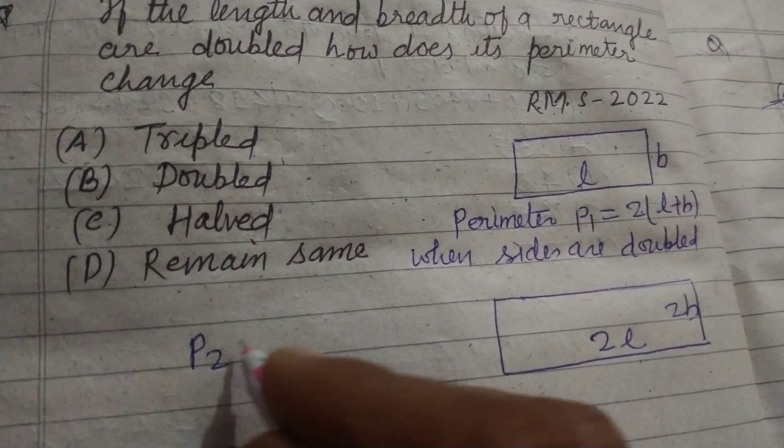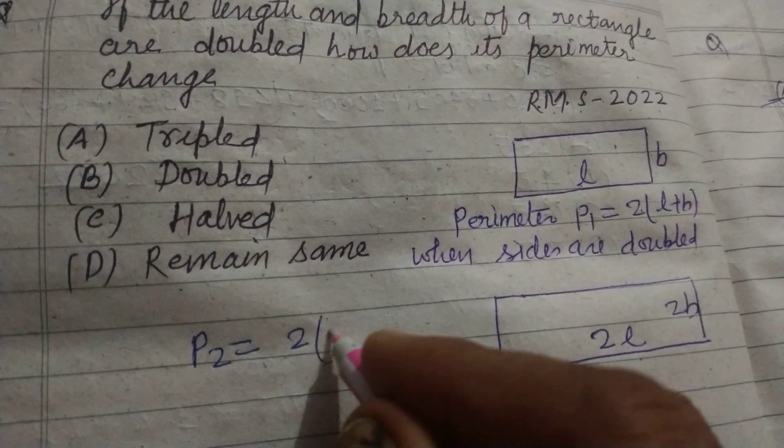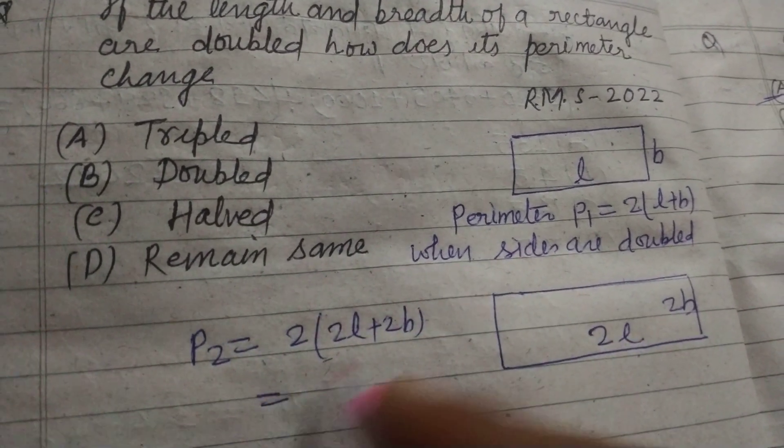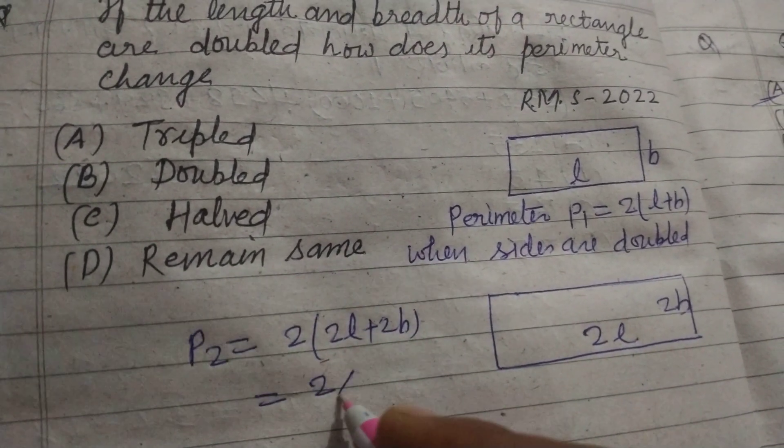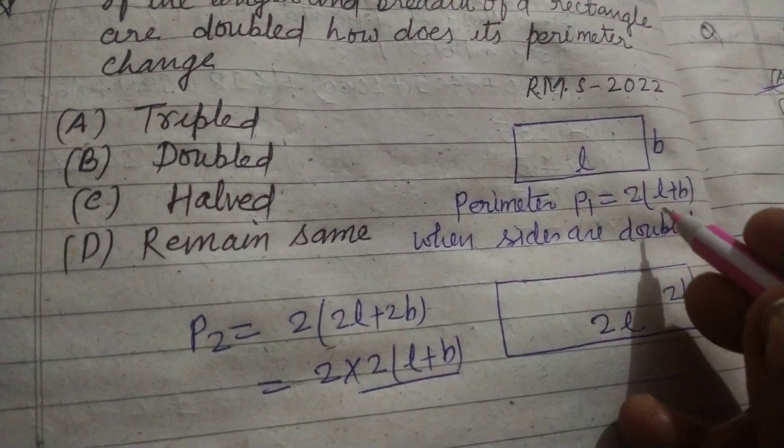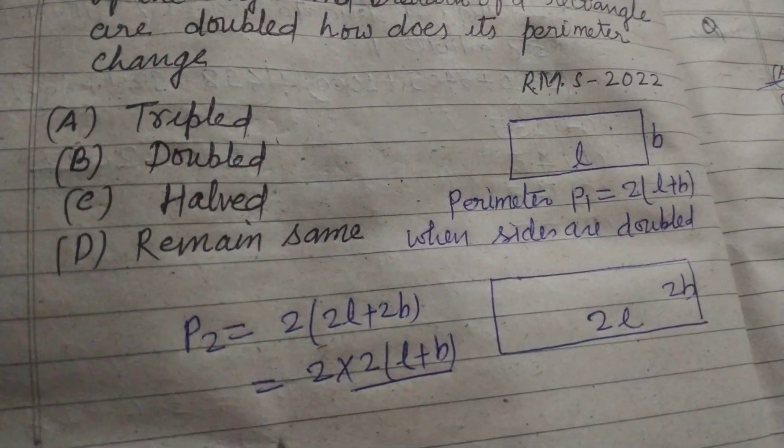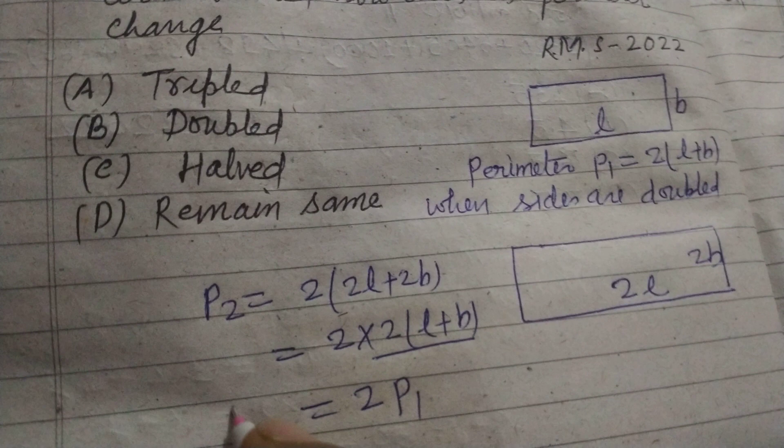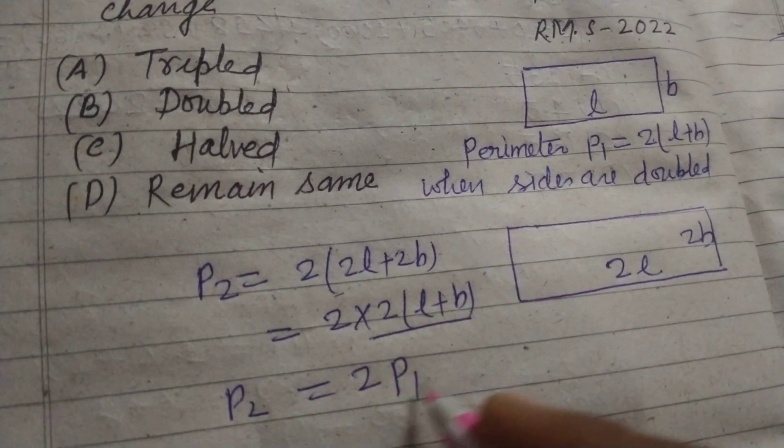So perimeter in this case P2 equals 2 times 2L plus 2B. We take 2 common, so 2 into 2 times L plus B, and this is what we have P1. Therefore 2 into P1, P2 equals 2 into P1.